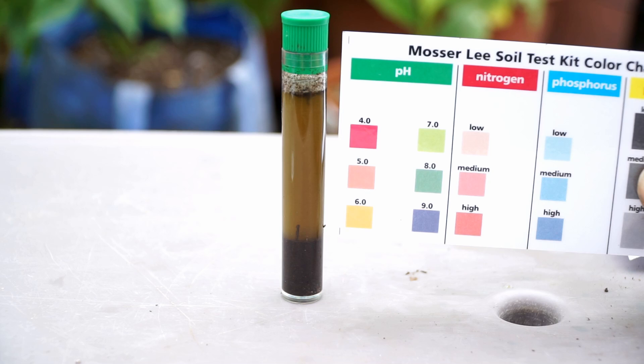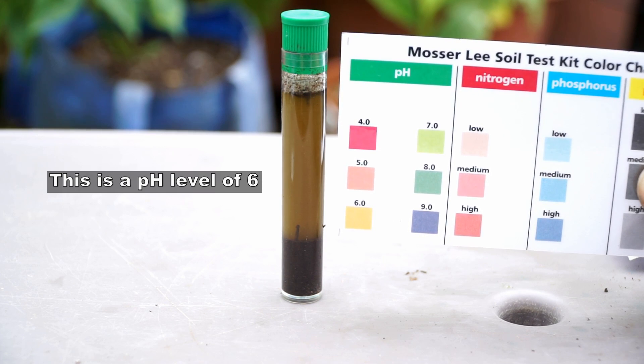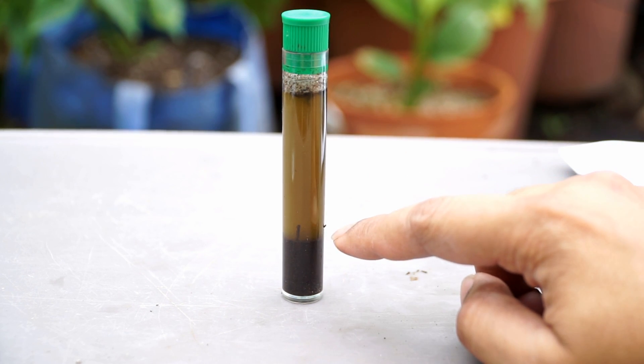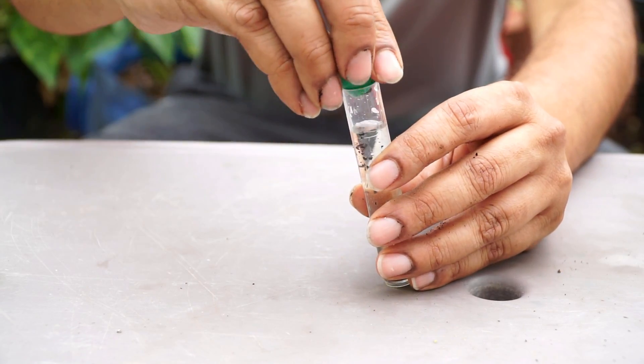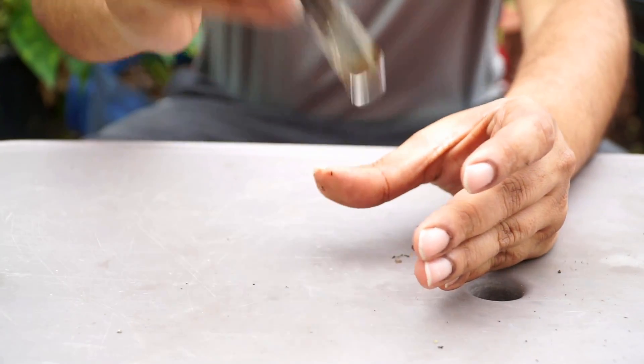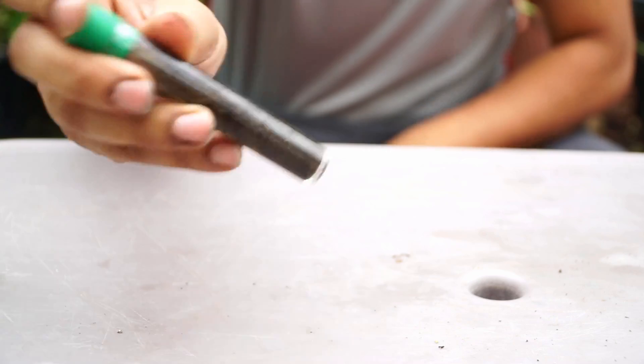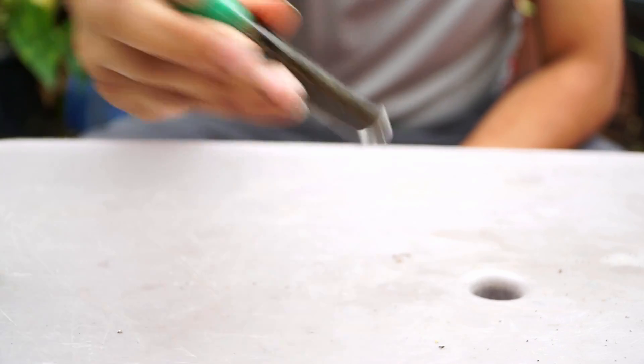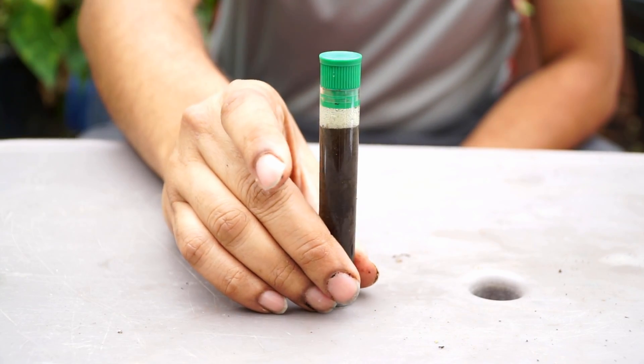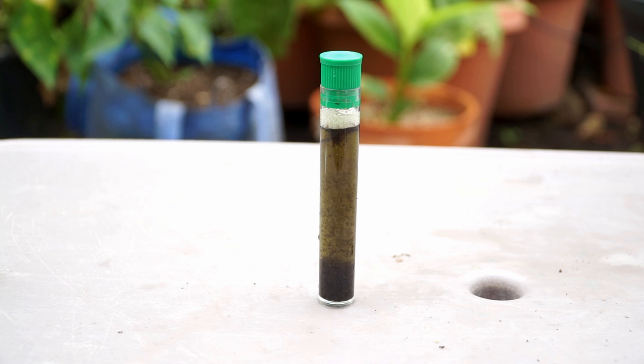As you can see here, the pH level is a little bit towards six. Let's take a soil sample from another bed. Remember that if you have multiple areas in your garden, you need to do one test per area.